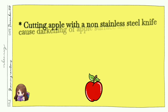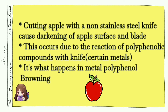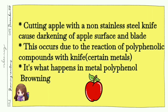Metal-polyphenol browning: a simple example is that when an apple is cut using a non-stainless steel blade or knife, the surface of the apple and blade become brown in color. This kind of browning mainly occurs in foods that contain polyphenolic compounds, and apple is an example of such a food. Please note that this is not enzymatic browning — though we also used the apple example when discussing enzymatic browning, these two types of browning are different.